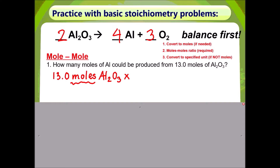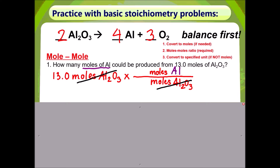Which brings us to Step 2, which is moles-to-moles ratio. Moles-to-moles ratio simply means having moles on top and moles on bottom. Since my given is in moles of aluminum oxide, I must place moles of aluminum oxide on the bottom so I can cancel it out. The question asks for moles of aluminum, therefore moles of aluminum should be on top.